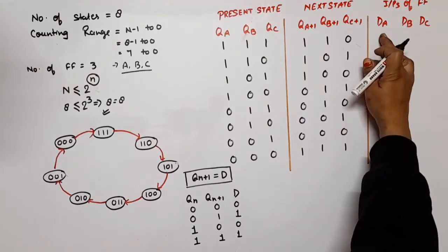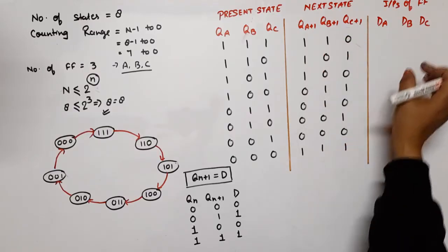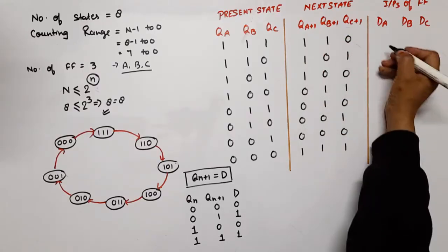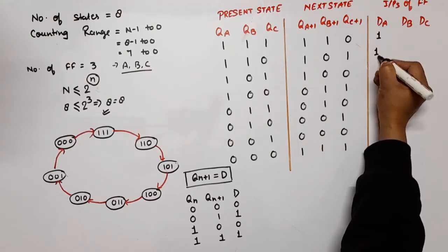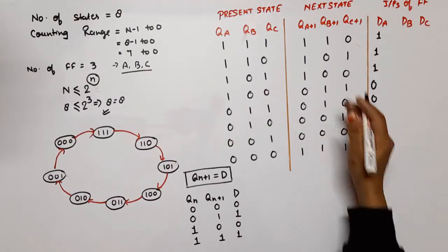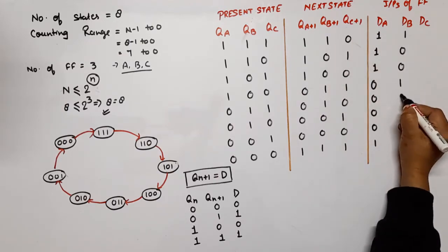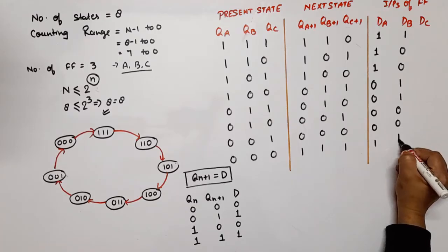Then we use the same thing here. So if we write dA, then we will write QA+1. For dB, we will write QB+1. For dC, QC+1. So it becomes 1-1-0, 1-0-1, 0-1-1, 0-0-0. Now dB is QB+1: 1-0-1-0, 1-0-1-0. Now dC is QC+1.